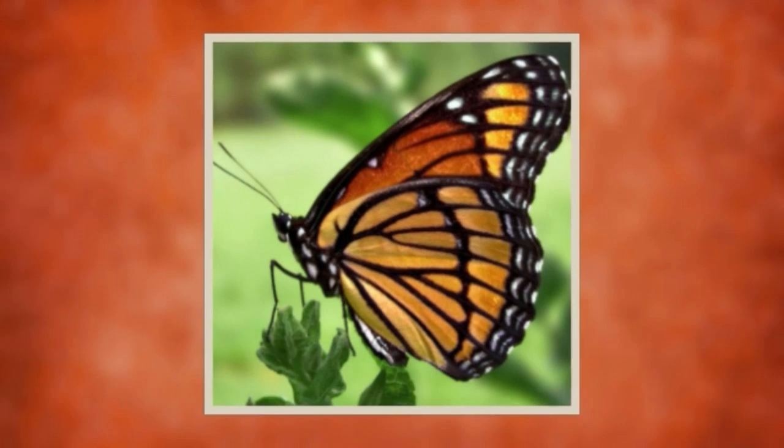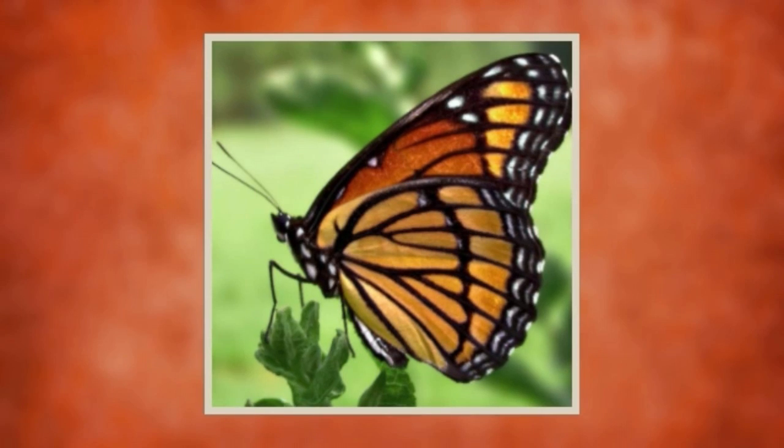For example, some butterflies have our three color receptors, and then an extra two: red, green, blue, and question mark, and question mark. We'd say just imagine the possibilities, but the whole point is that you can't.